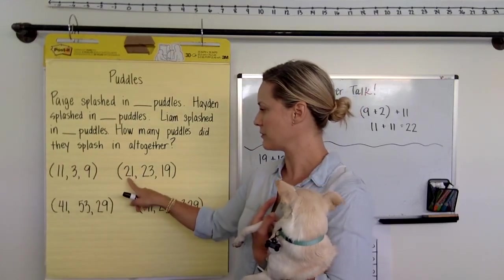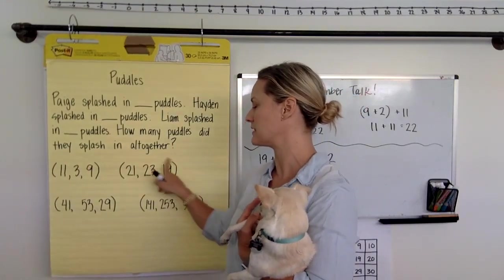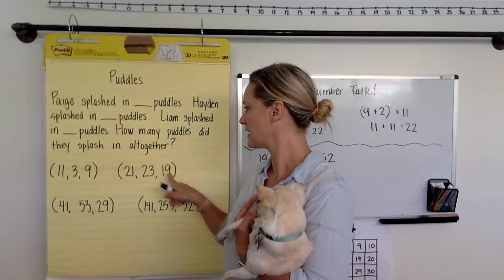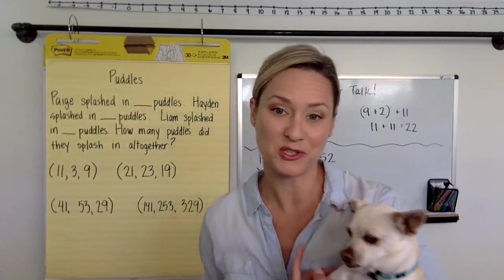Or if I chose this number set, it would be the same process. These numbers would stay together. Line one, line two, line three. It just depends which one you choose.